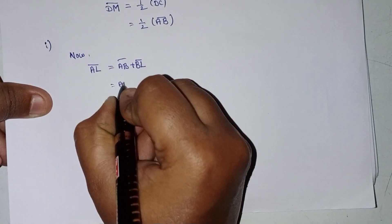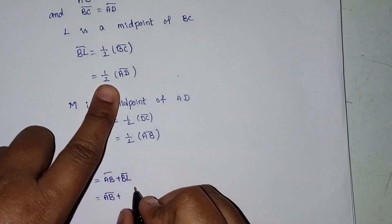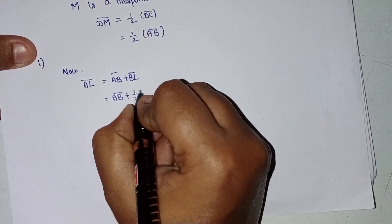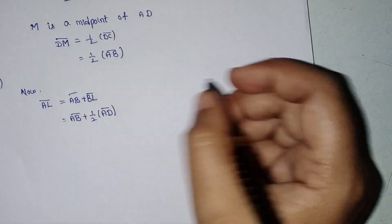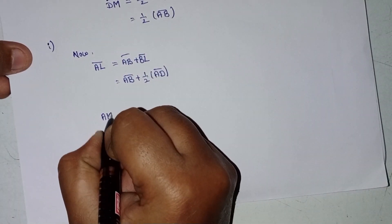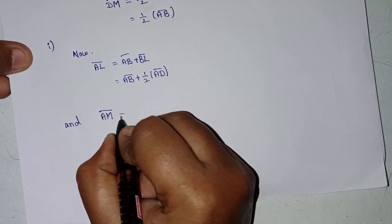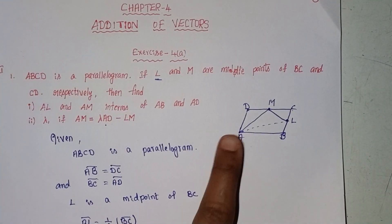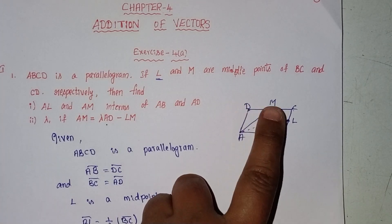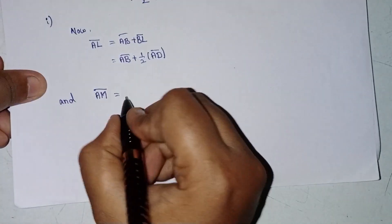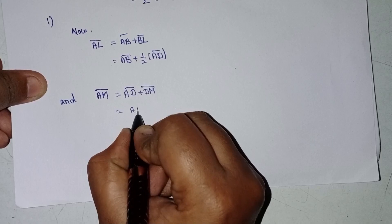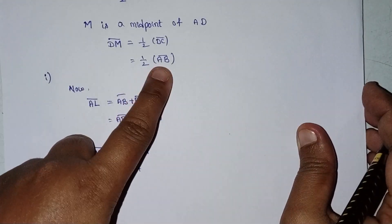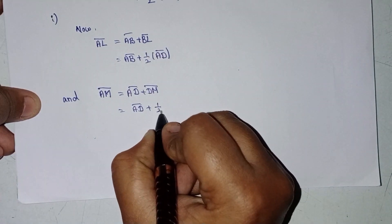AL equals AB plus BL, which means AL equals AB plus half into AD. Next, AM: AM equals AD plus DM, which means AM equals AD plus half into AB.